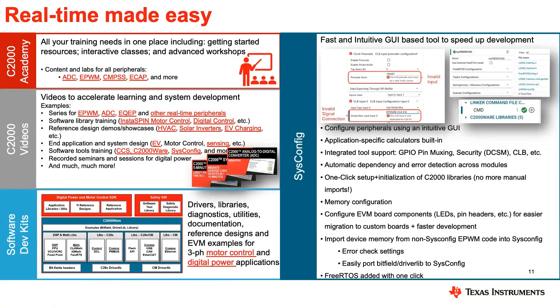Touching on the getting started front: I want to highlight the various software development kits or SDKs that are on ti.com for free for new and existing customers to start development with. This includes C2000ware, which contains low-level examples and libraries, and also includes application-specific software packages within digital power and motor control applications. So we have the Digital Power SDK as well as the Motor Control SDK, which support application libraries, different reference designs, and more. And lastly, safety software supporting most of our newer Gen 3 portfolio includes different self-test libraries, safety diagnostic libraries, and more.